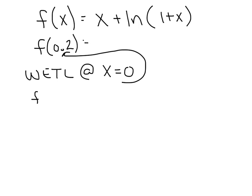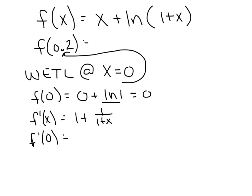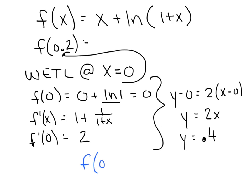And so we put it all together. We've decided f of 0 is going to be 0 plus the natural log of 1, and of course that's 0, so we just get 0s there. f'(x) is going to be 1 plus 1 over 1 plus x. And if I evaluate the derivative at 0, I'm going to get 1 plus 1, which is 2. I'm going to put this all together. We've got y minus 0 equals 2 quantity x minus 0. In other words, y equals 2x. If I substituted the 0.2 into that, 2 times 0.2 is going to give me 0.4. And so I can say with quite a bit of confidence that f of 0.2 is approximately 0.4.